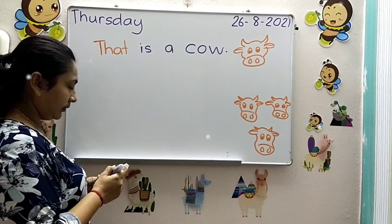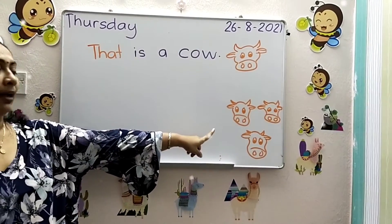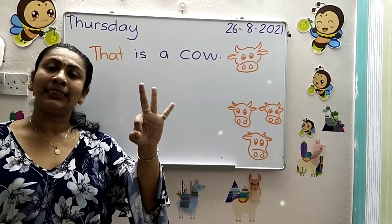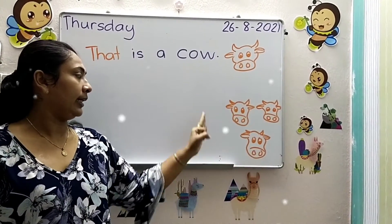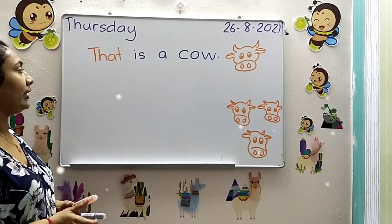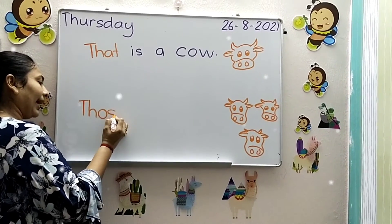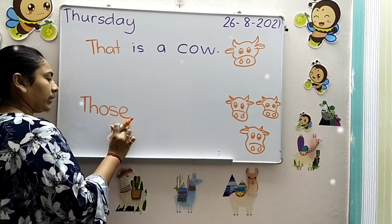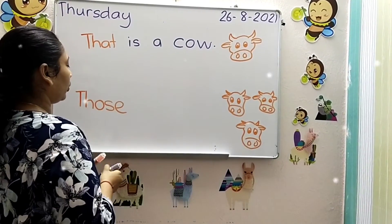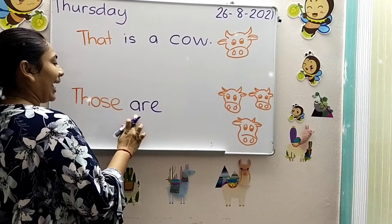And look at the second picture — how many cows are there? More than one: one, two, three. There are three cows. So I cannot use 'that' anymore; I use 'those' — T-H-O-S-E. And because it's many, I use the word 'are.' Those are cows.